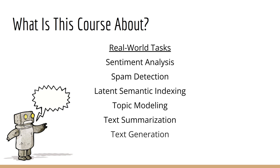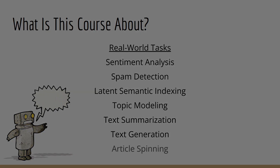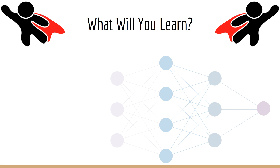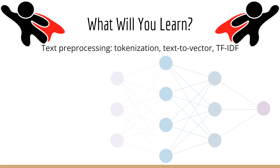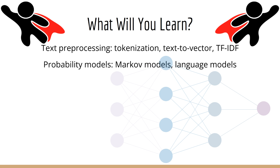You'll also learn about generating text and article spinning. We'll cover a wide variety of tools — beginning with simple things like text pre-processing, tokenization, and converting text into vectors. This will include classic methods like TF-IDF, as well as important probability models such as the Markov model, which has been a staple in this field for over 100 years.